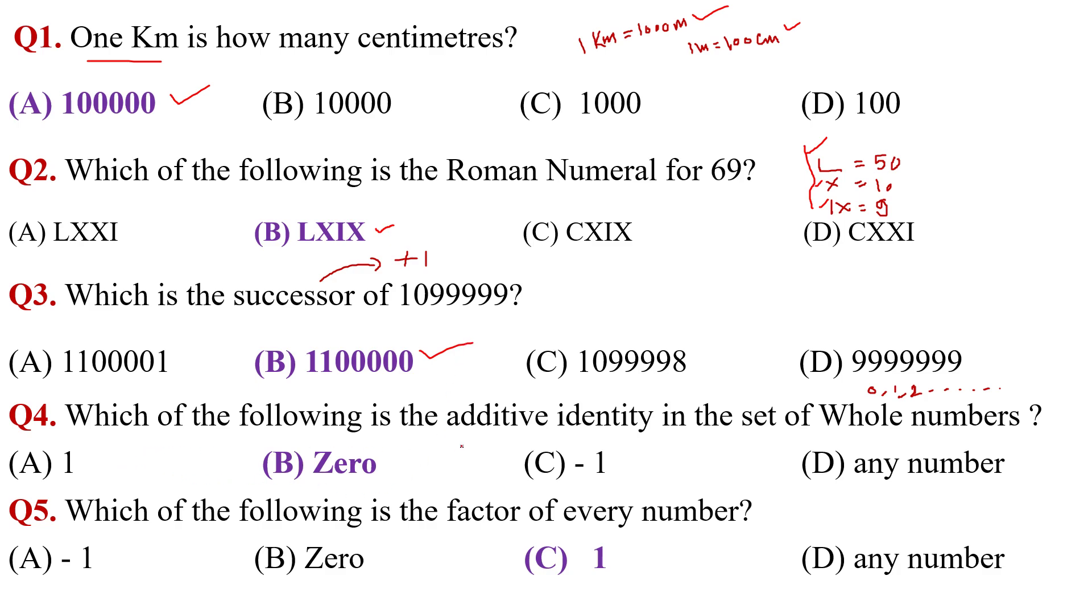Question number four, which of the following is the additive identity in the set of whole numbers? You know whole number set is 0, 1, 2, 3, 4. So additive identity is 0. Option B is the correct answer.